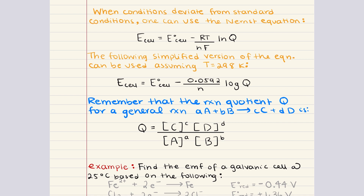The Nernst equation looks like this, where E cell is the EMF of the cell under non-standard conditions, E not cell is the EMF under standard conditions, R is the ideal gas constant, T is temperature, N is the number of moles of electrons, F is Faraday's constant, and here we also have the natural logarithm of Q, where Q is the reaction quotient for the reaction at a given point in time.